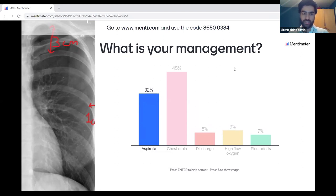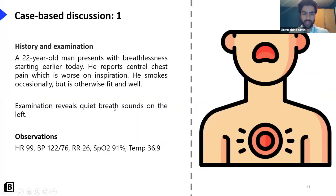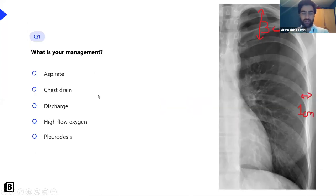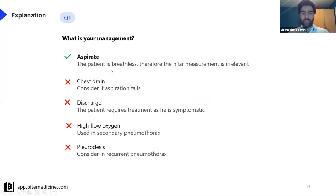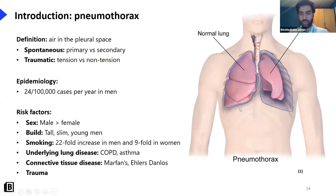The answer is aspiration. The main thing is you need to treat this because the patient is short of breath — it doesn't matter so much what the size is; the fact that the patient is symptomatic is an indication for treatment. If even a tiny pneumothorax is present but the patient is symptomatic, you need to treat it by aspiration. You can't discharge the patient because he's breathless and his saturation is 91%. Pleurodesis is considered for long-term recurrent pneumothoraces, and high flow oxygen is used in a secondary pneumothorax.